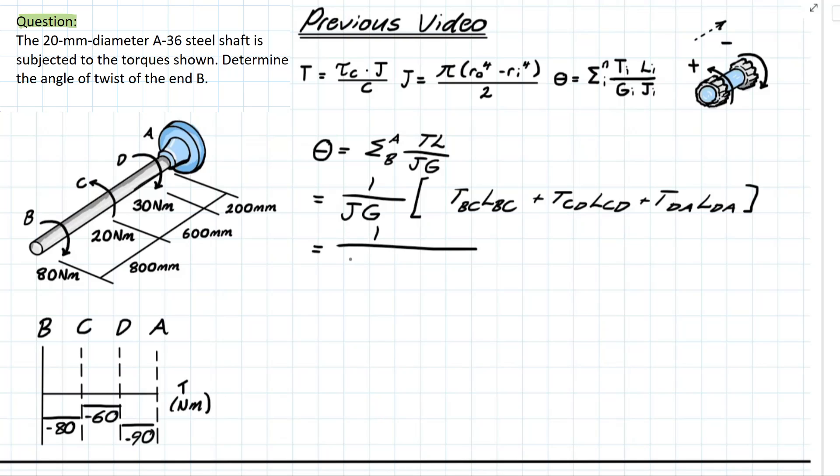We're going to have 1 over and we have pi over 2. Now we have a solid shaft meaning that our i is not going to be considered and since we are giving units in newton meter we have to consider that this diameter 20 millimeters in terms of meters.